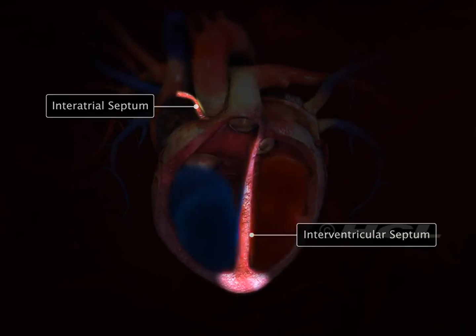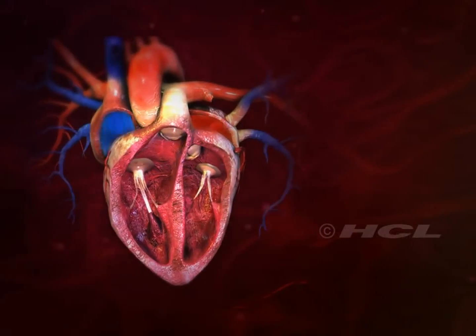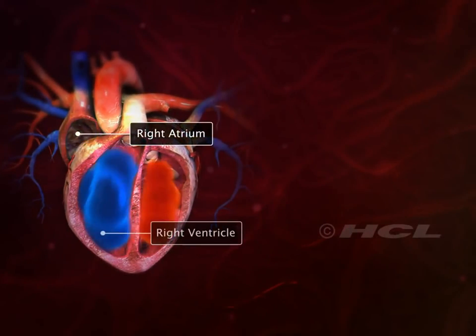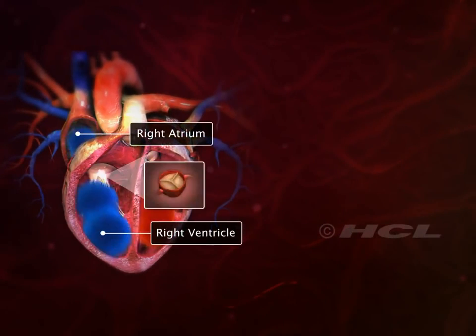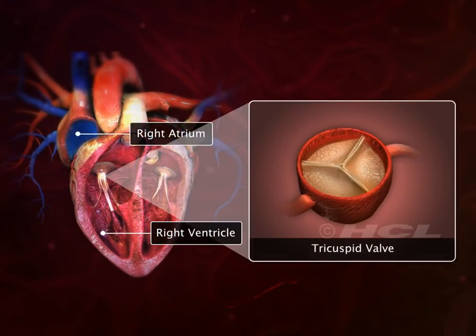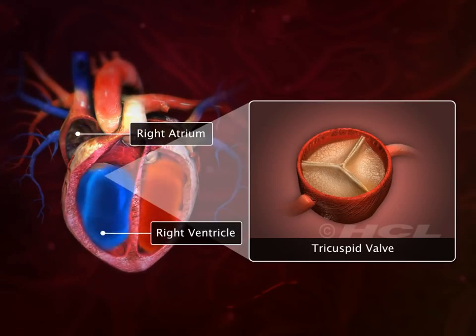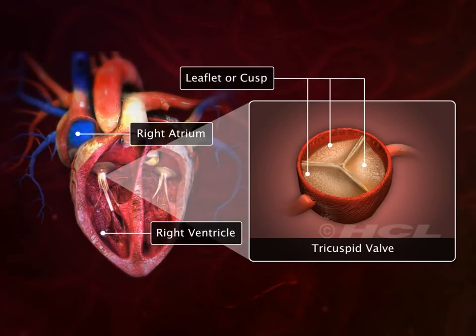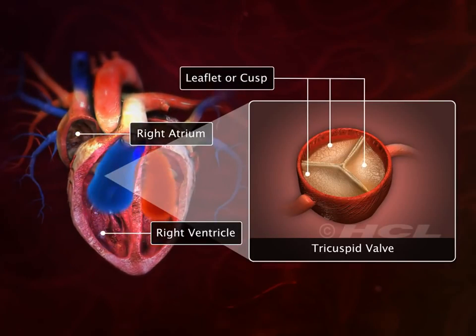The right atrium and right ventricle are connected through a tricuspid valve. As the name suggests, it has three leaflets or cusps.